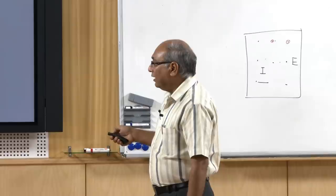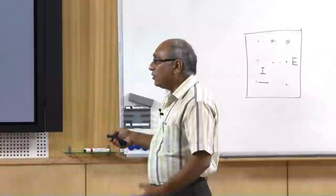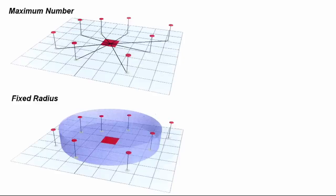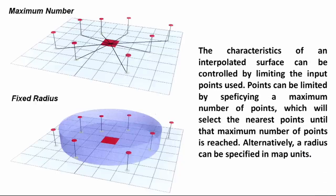Both options for search radius are available. A potential problem when fixing the number of points is at the edges beyond which you do not have data — in those cases extrapolation might be done, which may not be as accurate.